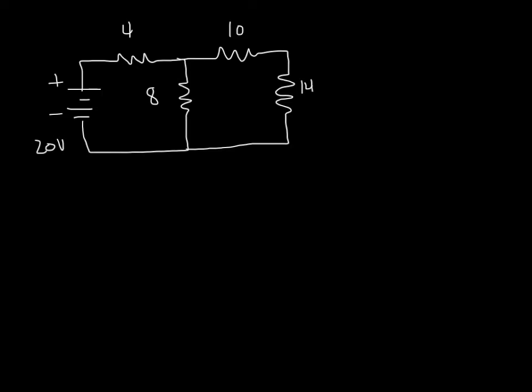And the question is, we know there's going to be some current flow. We call this I1, some current in this branch I2, current in this branch I3, and of course I3 in the 14 ohm resistor as well. So the question is, looking at that circuit, is there a way to simplify it so that I can solve it more easily?